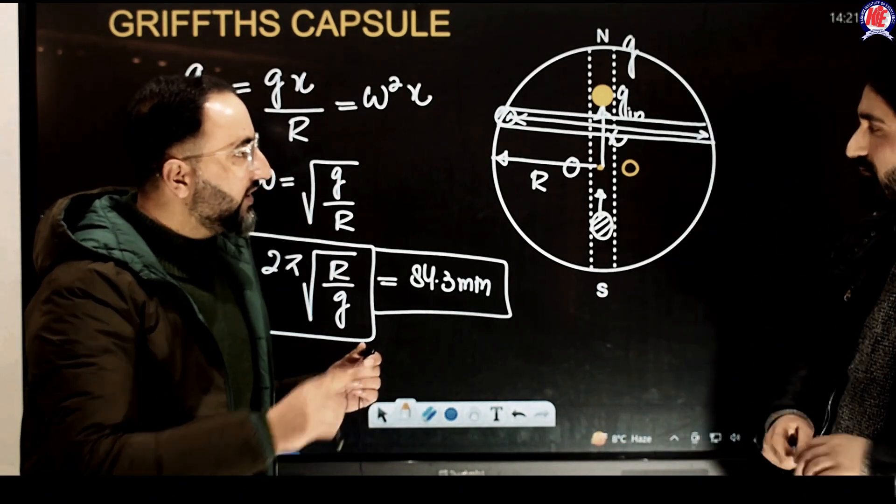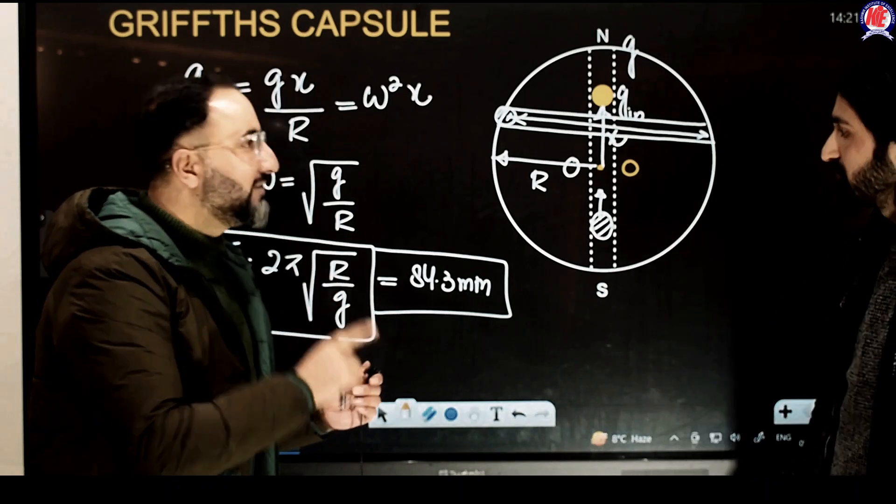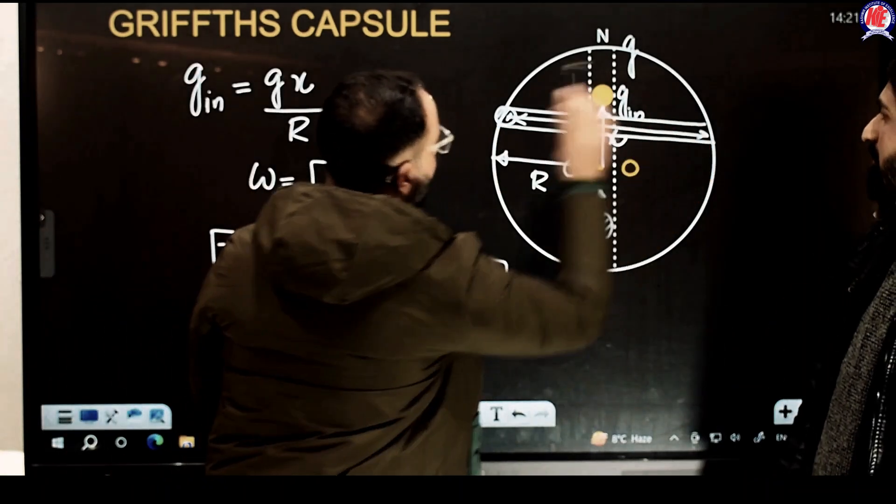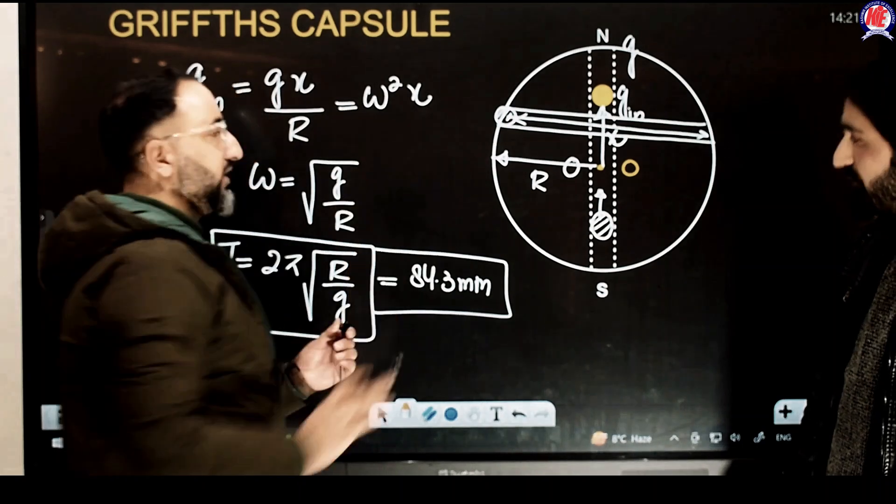So from one point to another point on the surface of Earth, you can reach in the minimum time, which is 42 minutes, from here to here, 42 minutes, and the time period will be 84 minutes.